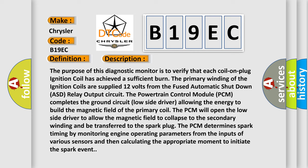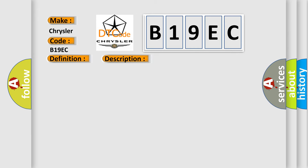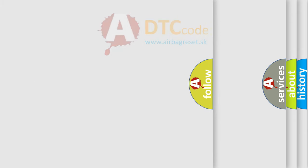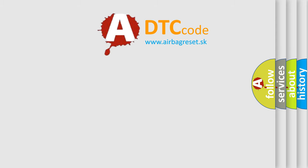This diagnostic error occurs most often in these cases: Ignition Coil 1 signal circuit open or high resistance; Ignition Coil 1 signal circuit shorted to ground; ASD output relay circuit open or high resistance; Ignition Coil 1 Powertrain Control Module (PCM) fault. The Airbag Reset website aims to provide information in 52 languages. Thank you for your attention and stay tuned.